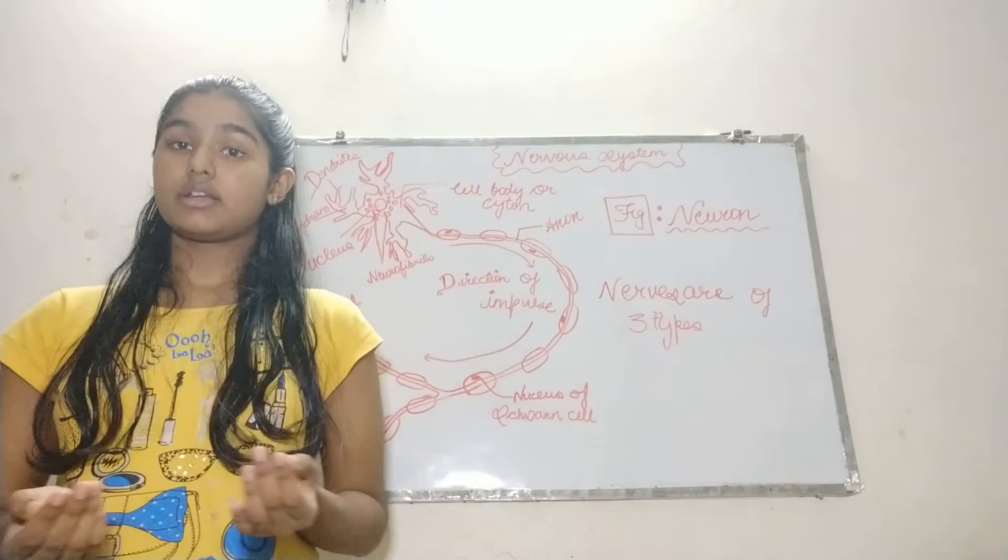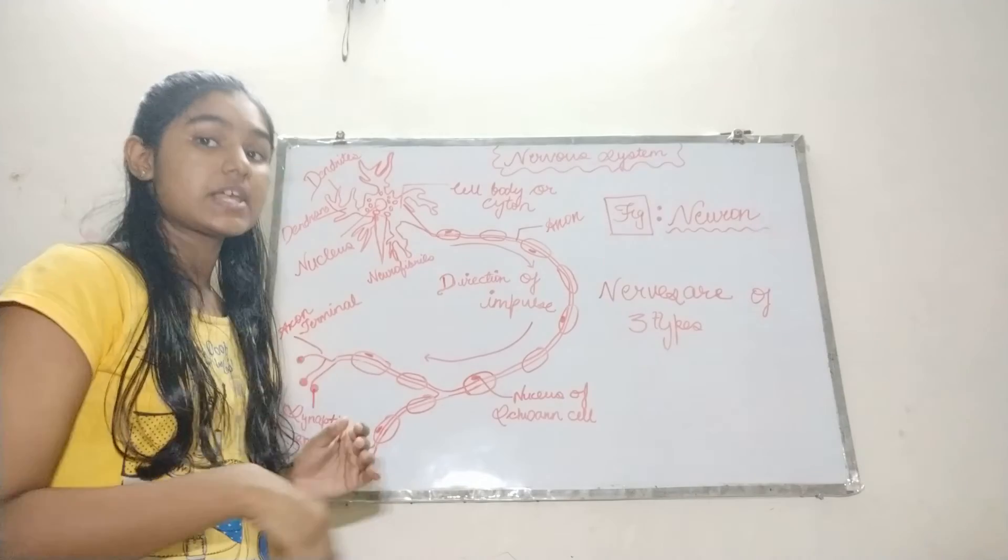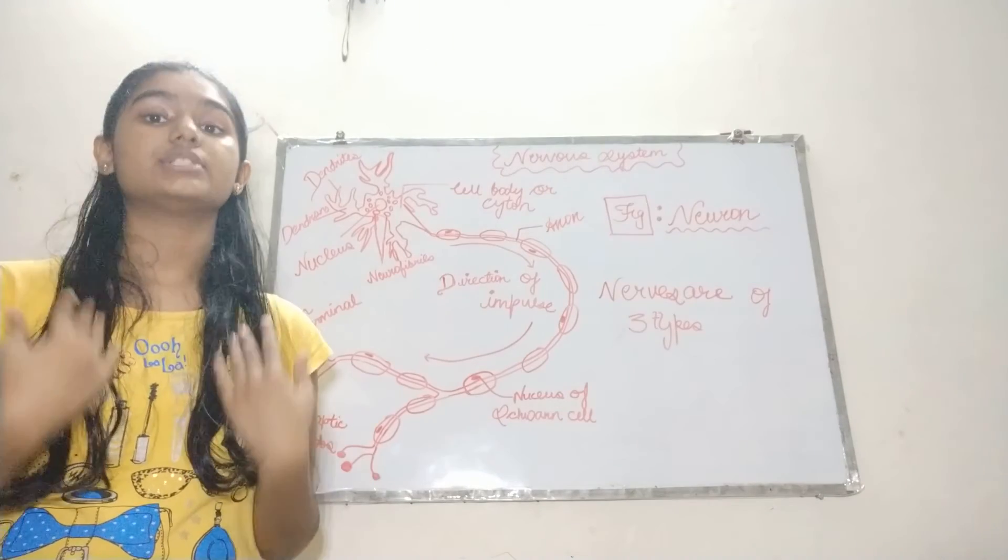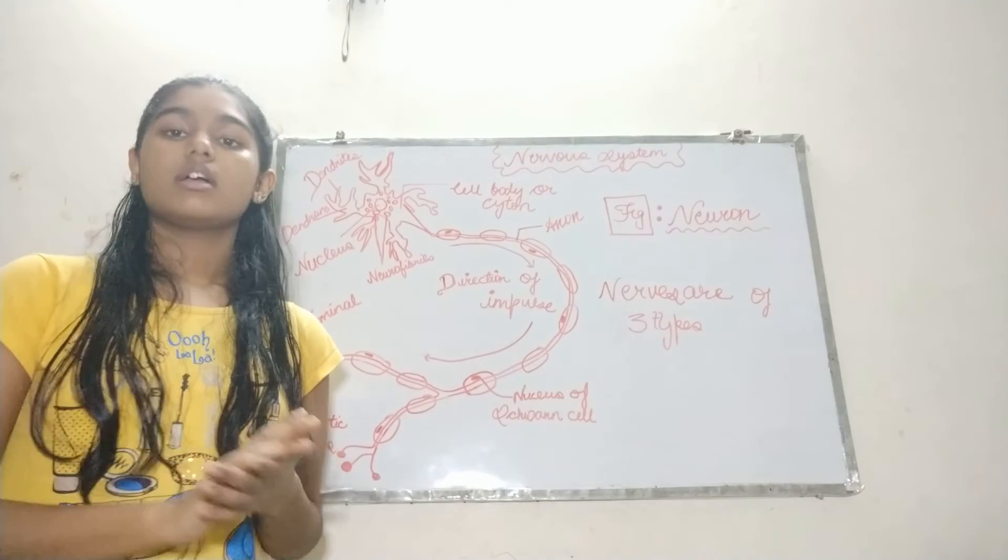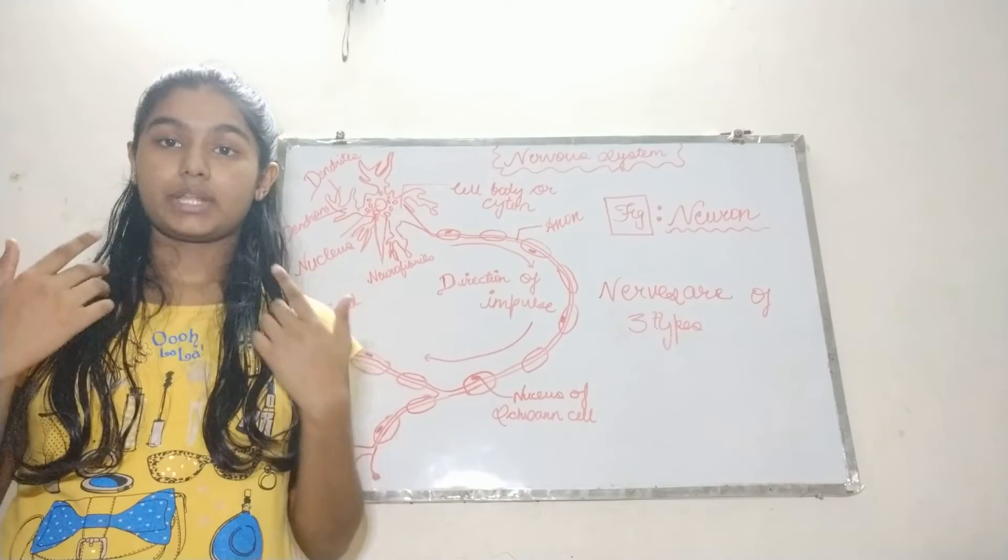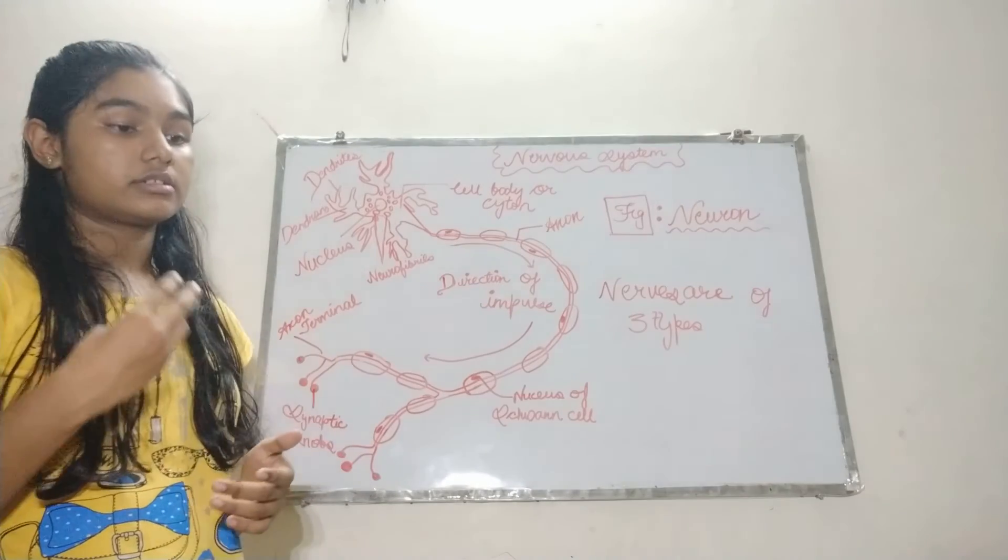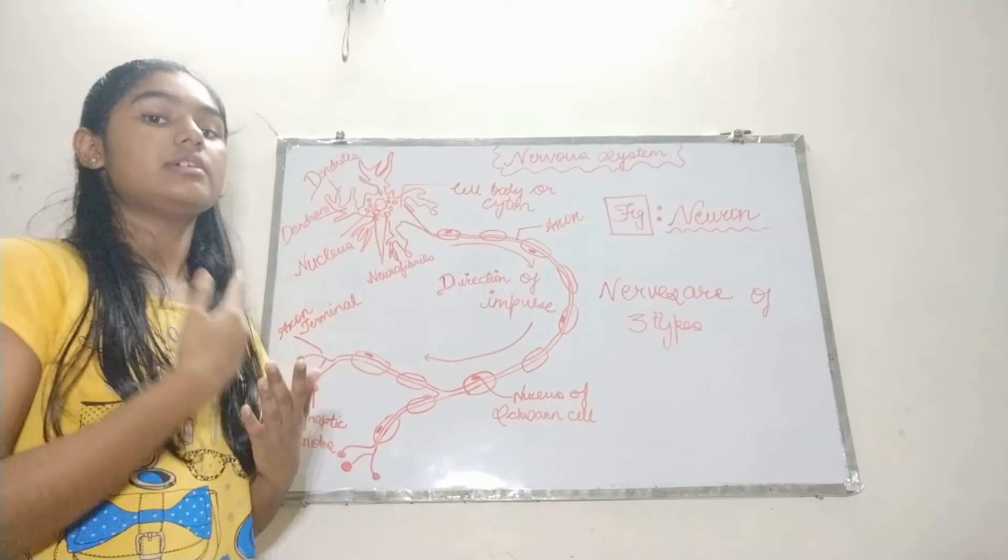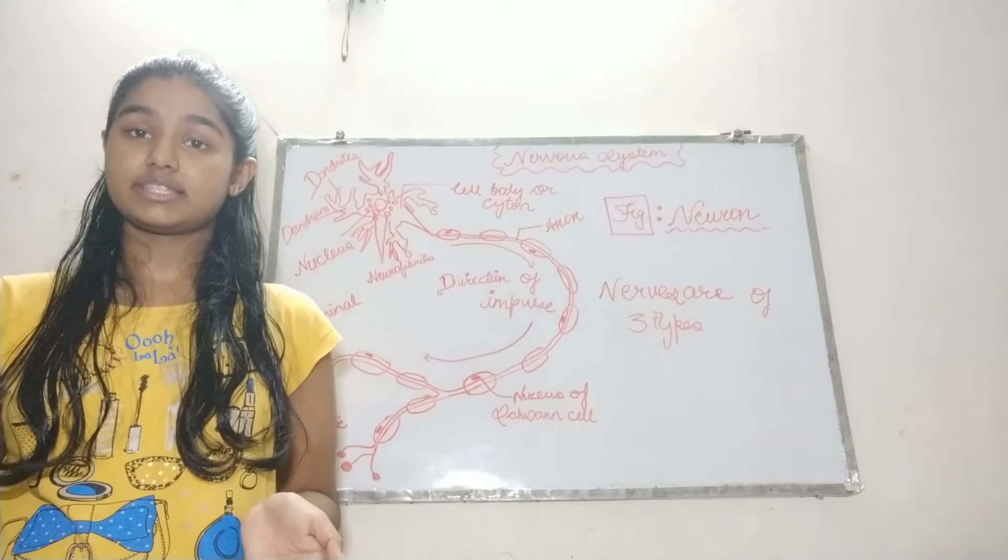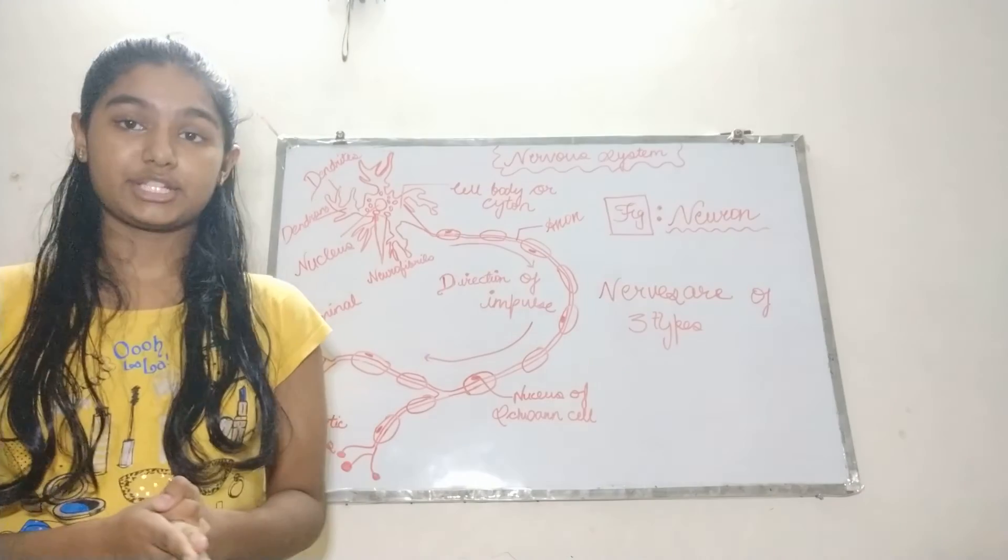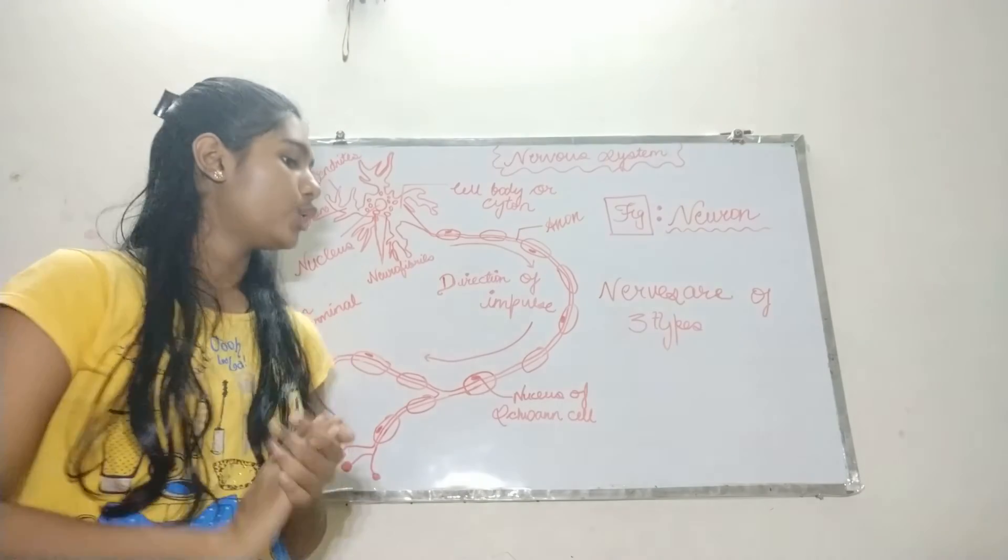Second one is motor nerves. These nerves carry the impulses from our central nervous system to our muscles, glands, etc. For example, nerves which supply our eye muscles. And the third and last one is our mixed nerves. It consists of both the motor nerves and the sensory nerves together, known as mixed nerves. For example, spinal nerves.